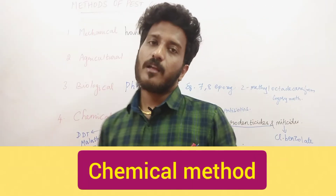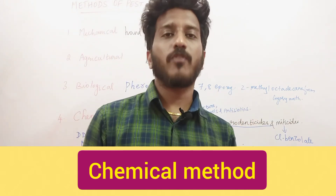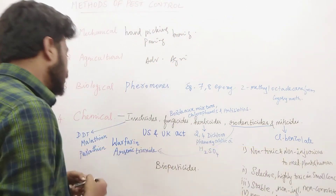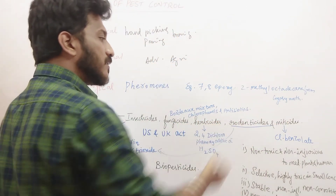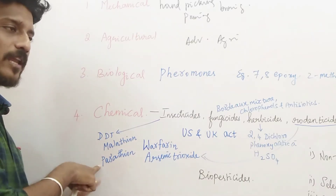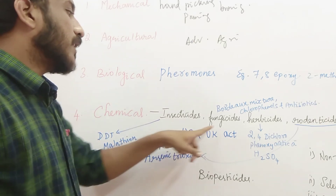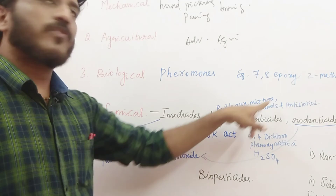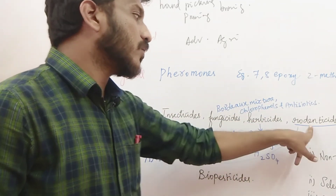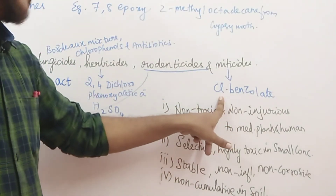The last method is the chemical method, where you use a lot of chemicals in the field. Though it is not advisable, the chemical method is still followed. Types include insecticides, fungicides, herbicides, rodenticides, and miticides. Insecticide examples: DDT, Malathion, Parathion. Fungicide examples: Bordeaux mixture, chlorophenols, and antibiotics. Herbicide examples: 2,4-Dichlorophenoxyacetic acid and sulfuric acid. Rodenticide examples: Warfarin and arsenic trioxide. Miticide example: Chlorobenzilate.